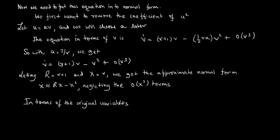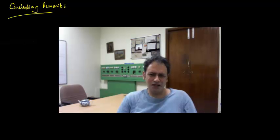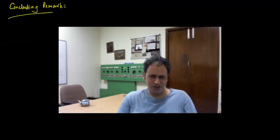In terms of the original variables, X = v = u/a = (r/2)(x - 1).